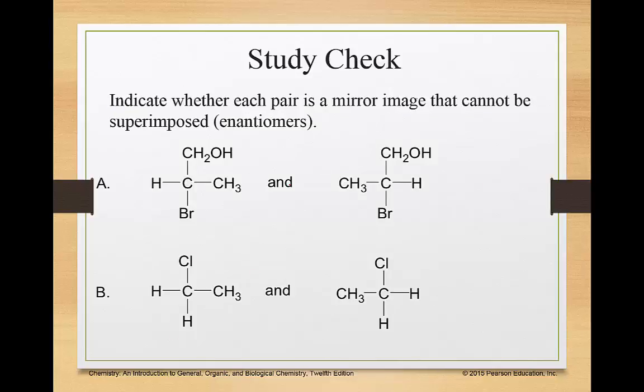So first of all, let's check whether or not each pair is a mirror image that cannot be superimposed. They're enantiomers. CH3, CH2OH, Br, H. Those are enantiomers because of the fact that there's four things coming off of it. Part B, because of this hydrogen here, since there's two of them, those are not enantiomers. Those are not, they can be superimposed.